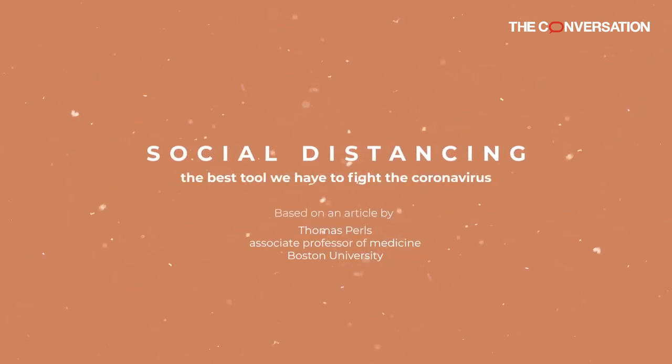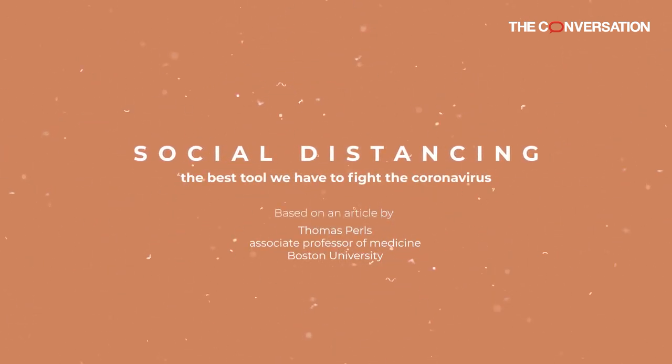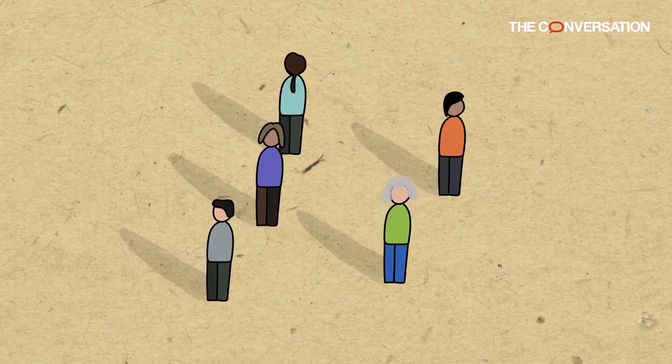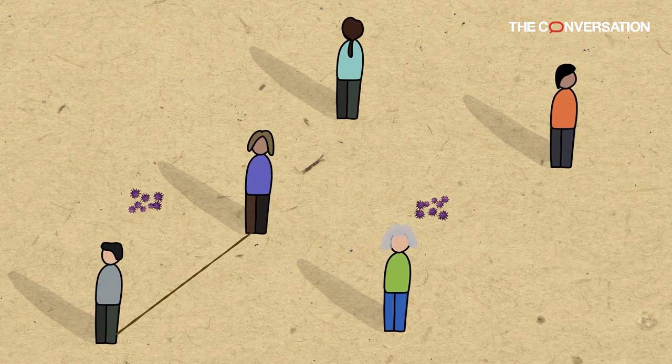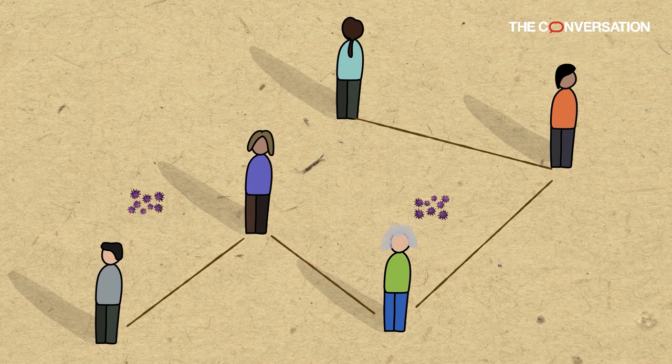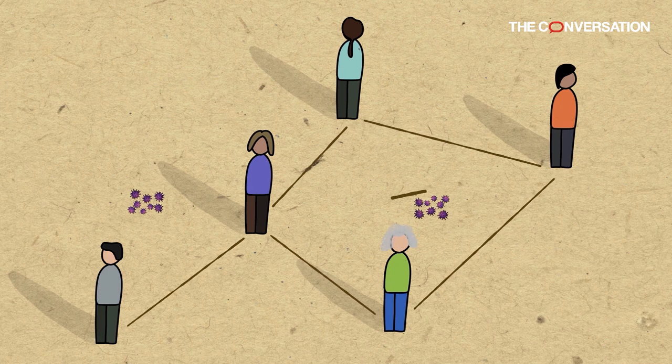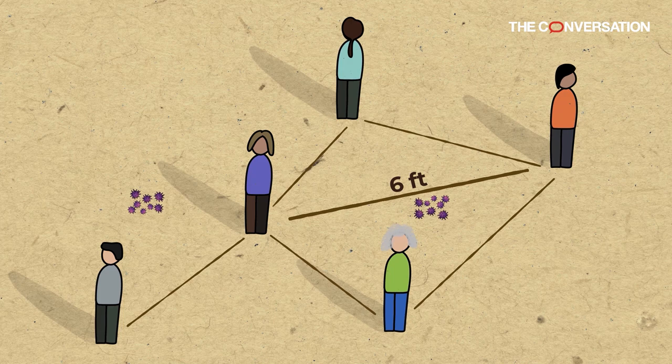Social distancing is a tool public health officials can use to slow the spread of a disease that is being passed from person to person. The CDC describes social distancing as staying away from mass gatherings and keeping a distance of six feet or two meters from other people.